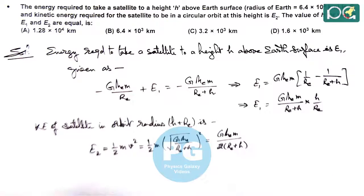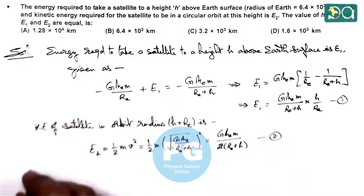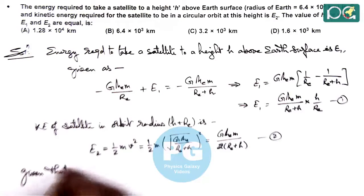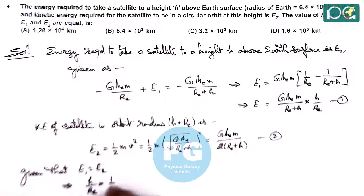And we are given that the two values are equal. If this is equation 1, this is equation 2, and we are given that E1 equals E2. So if we equate the two values, this gives us H over Re equals 1 by 2.